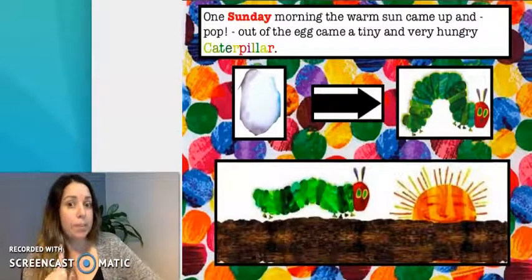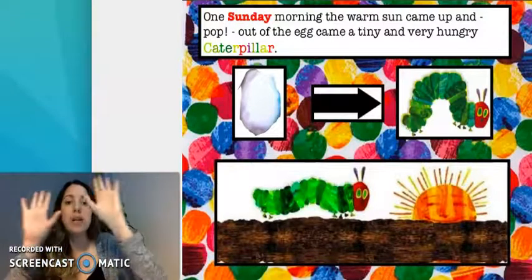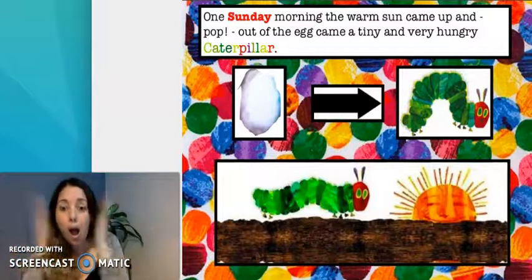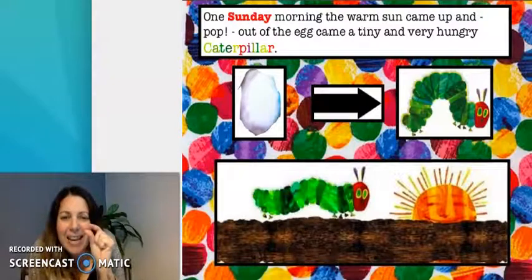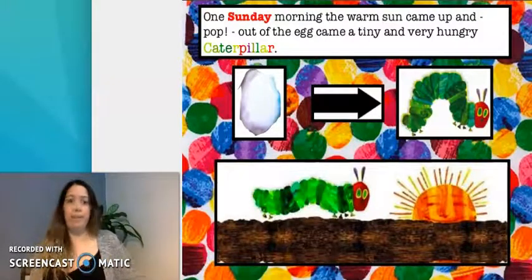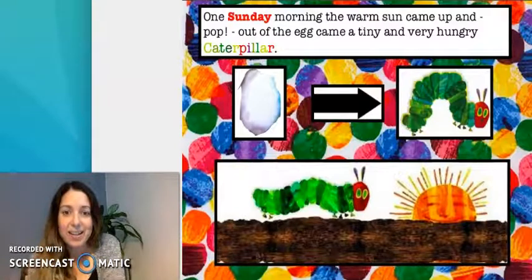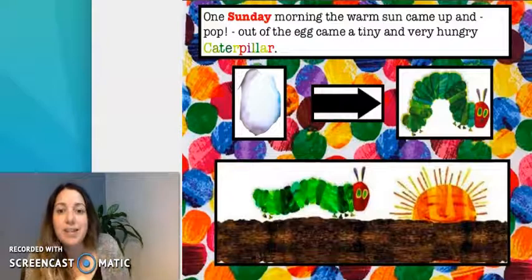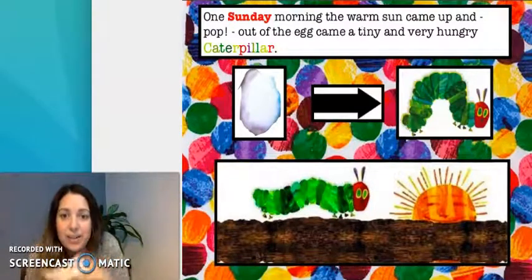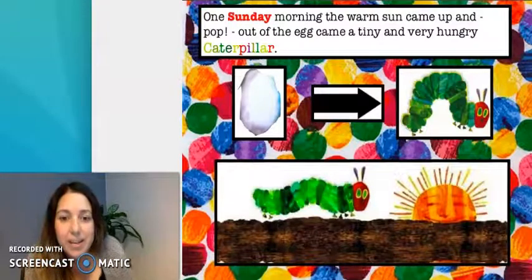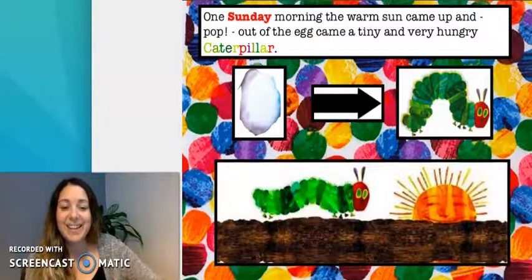Well, Sunday morning, domingo a la mañana, the warm sun came up and pop! Out of the egg came a tiny and very hungry caterpillar. So with the sun, the caterpillar came out of the egg. Can you see the caterpillar with all its colors? Green and red and the sun. Let's see.